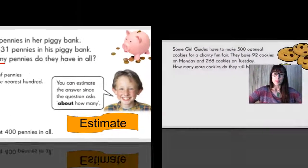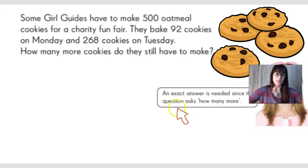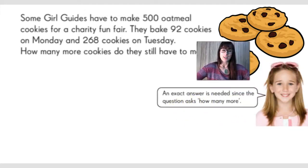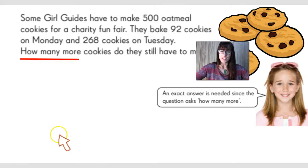Let's look at another problem. Some girl guides have to make 500 oatmeal cookies for a charity funfair. They bake 92 cookies on Monday and 268 cookies on Tuesday. How many more cookies do they still have to make? Do we need to find an exact number or just an estimate? In this case, you will have to find the exact number because an exact answer is needed since the question asks 'how many more.' When we see 'how many more' questions, we have to get the exact answer.